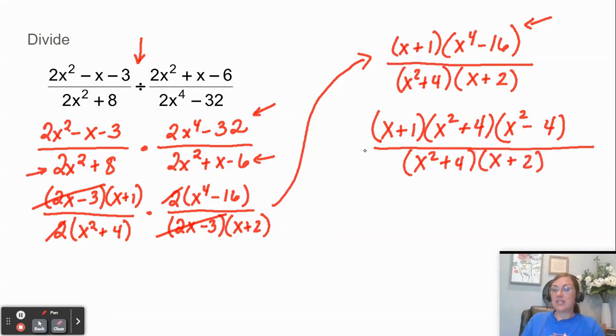So notice that the x² + 4 is canceled. So we'll cancel those out. And now on top I'm left with (x + 1)(x² - 4) and then an x + 2.